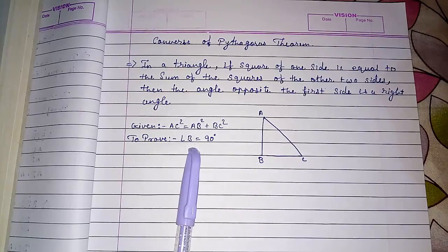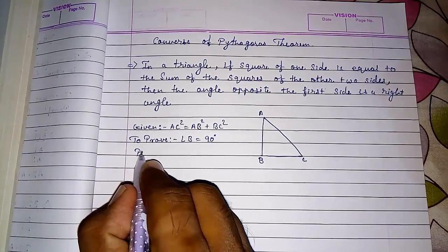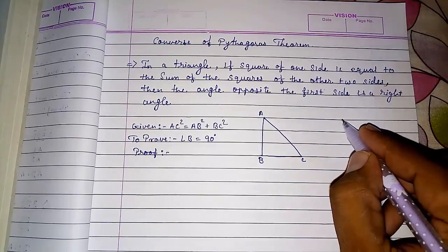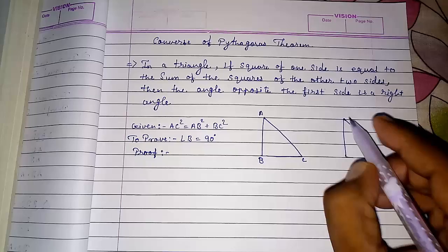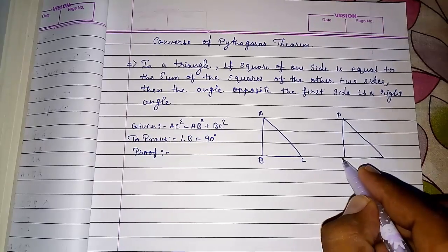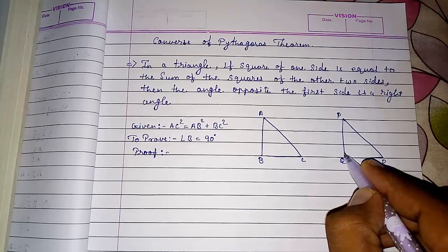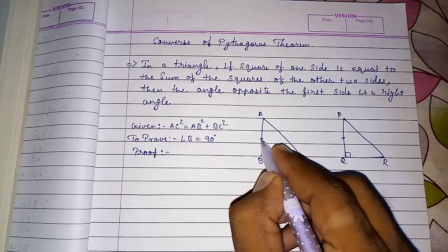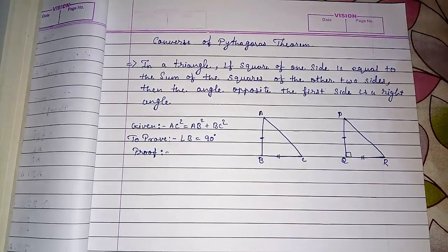And we have to prove that angle B is 90 degrees. So for proving this, first we have to construct a triangle PQR in such a way that angle Q is 90 degrees, and PQ equals AB and BC equals QR.